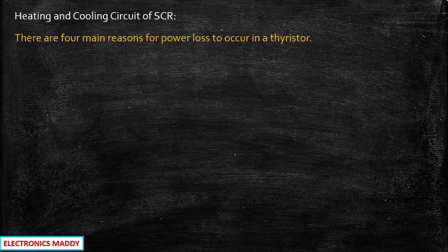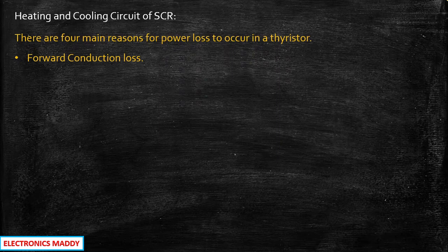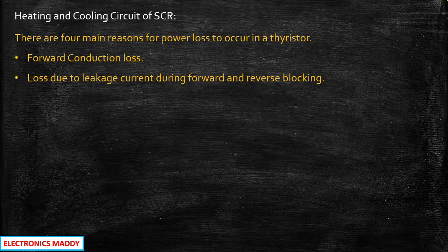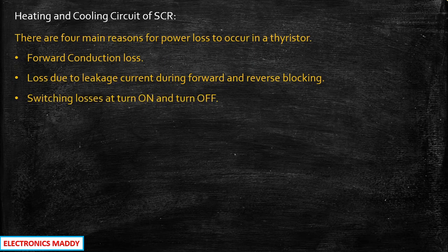In order to understand why a heating and cooling circuit is required for an SCR, we need to first understand what are the power losses in a thyristor. The first and foremost, the maximum occurring loss is forward conduction loss, due to the conduction state of the thyristor. We also have loss due to leakage current during forward blocking mode and reverse blocking mode, as we have seen in the SCR characteristics. Switching losses at turn-on and turn-off time will also be there. Lastly, we also have something called gate triggering loss.